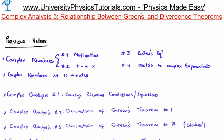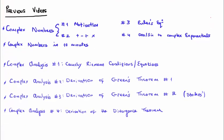Before we begin, I'd like to remind you of the relevant previous videos in this section. Of course we are discussing complex analysis, so the videos on complex numbers are important. In video 1 in this section I derived the Cauchy-Riemann equations. In videos 2 and 3 I derived Green's theorem using two different methods. And in video 4 I derived the divergence theorem. So what we're going to do in this particular video is show the relationship between Green's theorem and the divergence theorem.